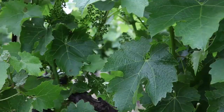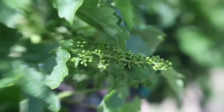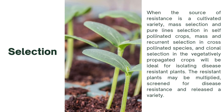Selection: when the source of resistance is a cultivated variety, mass selection and pedigree selection are used in self-pollinated crops; mass and recurrent selection in cross-pollinated species; and clonal selection in vegetatively propagated crops. These methods are ideal for isolating disease-resistant plants. The resistant plants may be multiplied, screened for disease resistance, and released as a variety.